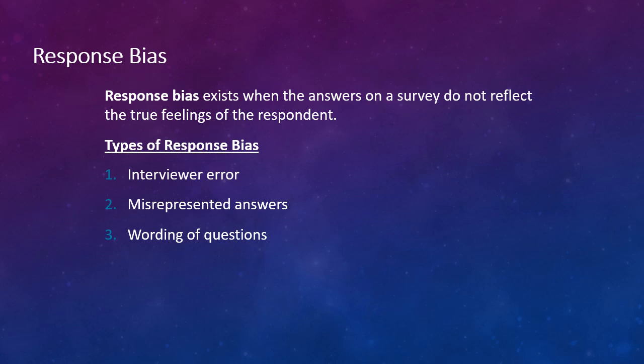There's a really interesting example in your text as well around this type of bias of wording of questions. They give this example of how the same question was worded in two different ways. Do you think the United States should forbid public speeches against democracy? Was one question. Do you think the United States should allow public speeches against democracy? 21% of the first one gave yes responses. Almost 50% of the second one gave no responses, which is the same thing. The conclusion you may arrive at is that most people are not willing to forbid something, but more people are willing not to allow something. These results show how wording a question can alter the survey's outcome.